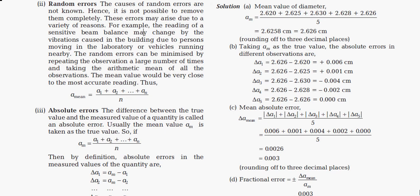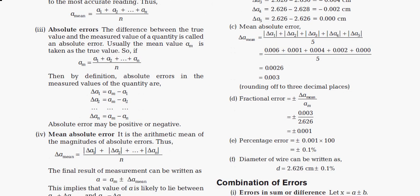Absolute error is the difference between the true value and the measured value of a quantity. Usually the mean value a_m is taken as the true value. So first we find a_m, which is (a1 + a2 + ... + an) / n. Then by definition, the absolute error in each measured value is: Δa1 = a_m − a1, Δa2 = a_m − a2, and so on up to Δa_m = a_m − a_n. The absolute error may be positive or negative.